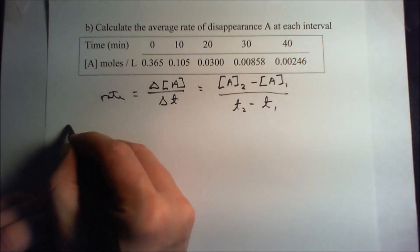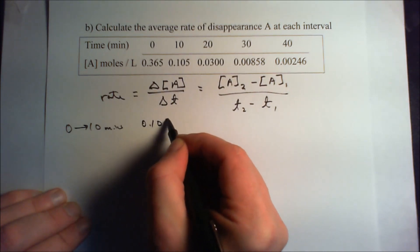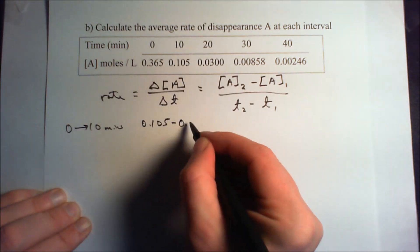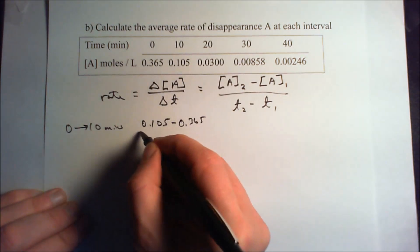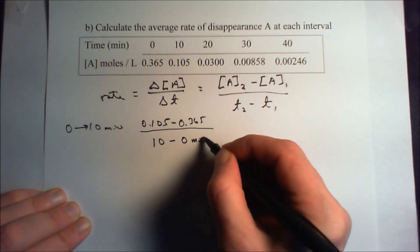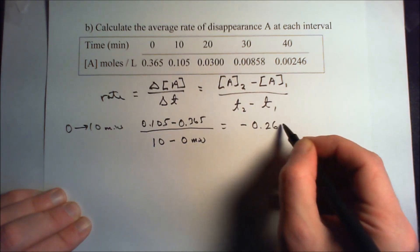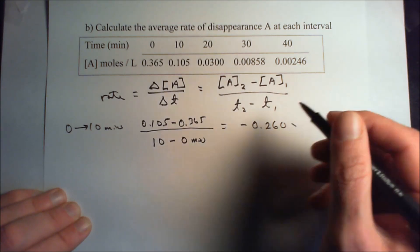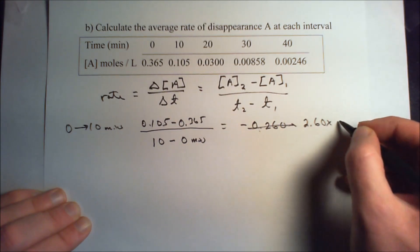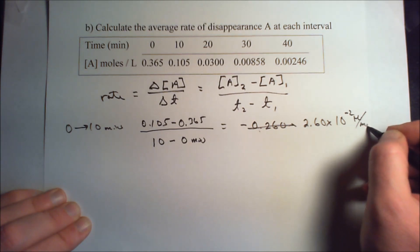From 0 to 10 minutes, this would be 0.105 minus 0.365, divided by 10 minus 0 minutes. That gives us minus 0.260, which in scientific notation is negative 2.60 times 10 to the minus 2 molarity per minute.